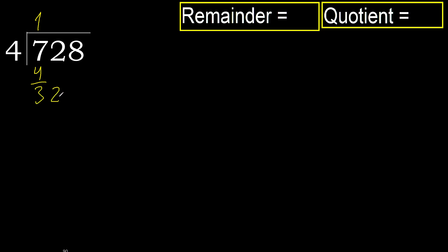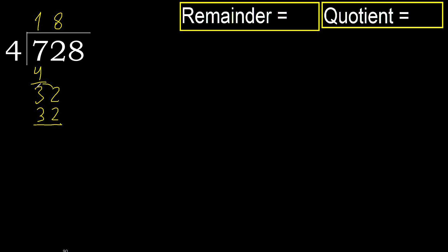Bring down 2, giving 32. 4 multiplied by 9 is 36, which is greater. Multiply by 8: 4 multiplied by 8 is 32, which is not greater. Subtract. Next.